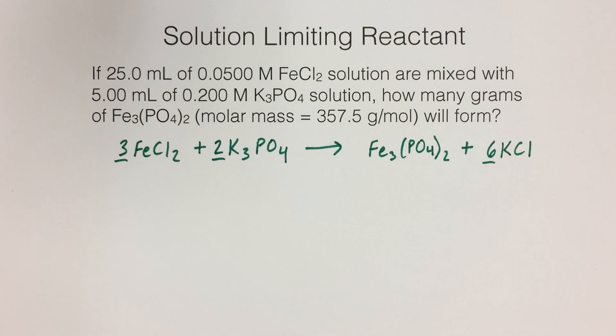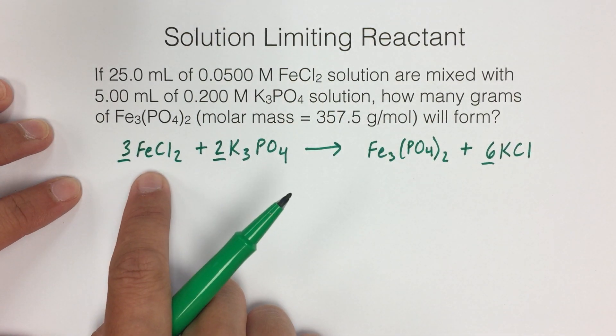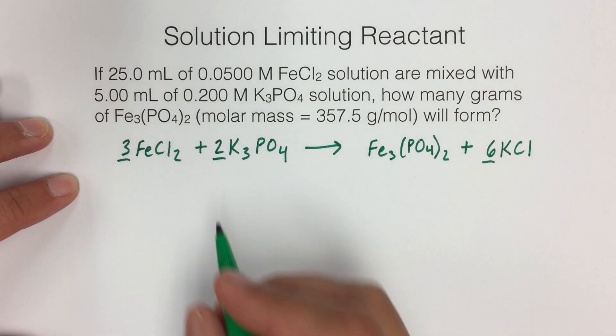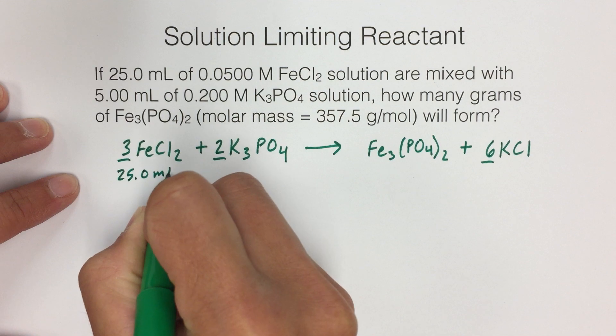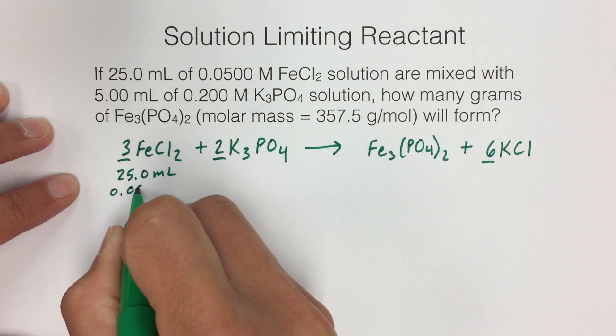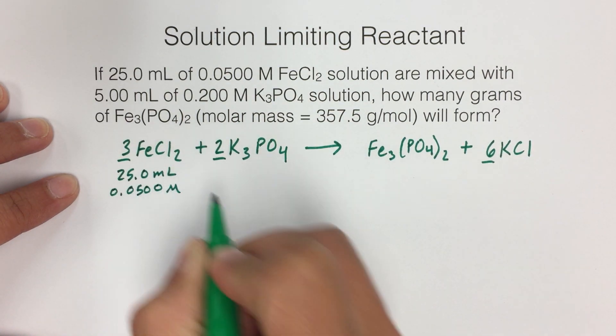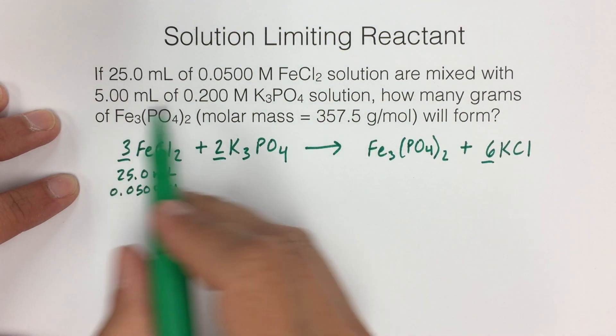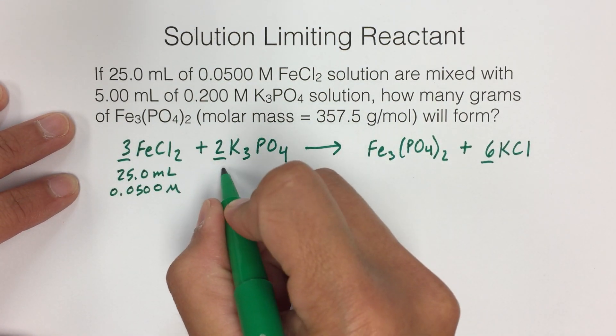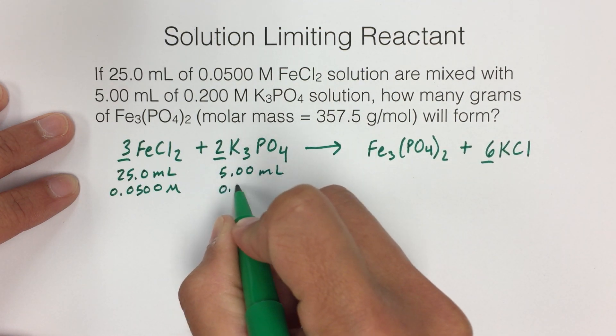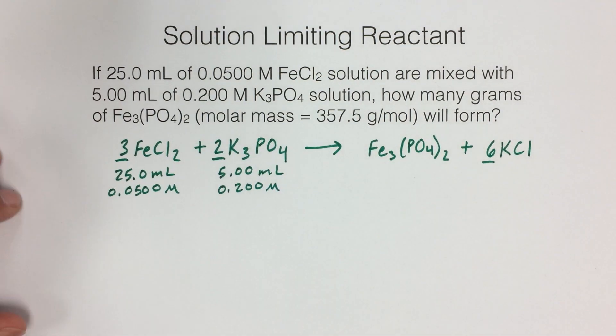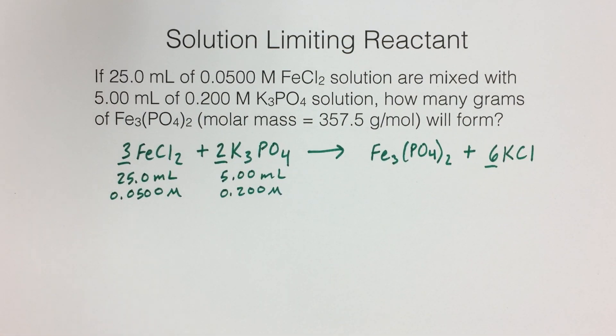Second step is to write down all the information that's given because there's a lot of numbers in here. So let's label our iron(II) chloride with that information. We have 25 milliliters of that, and it is 0.0500 molar. And then the other thing is the potassium phosphate. We have 5 milliliters of that and the concentration is 0.200 molar.